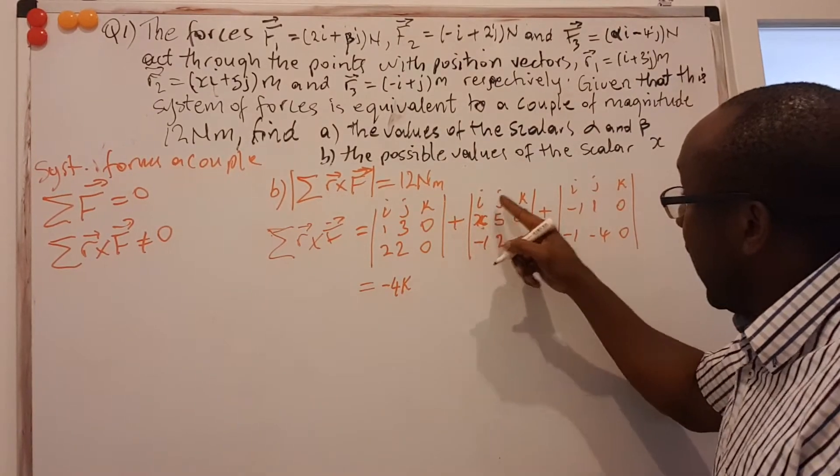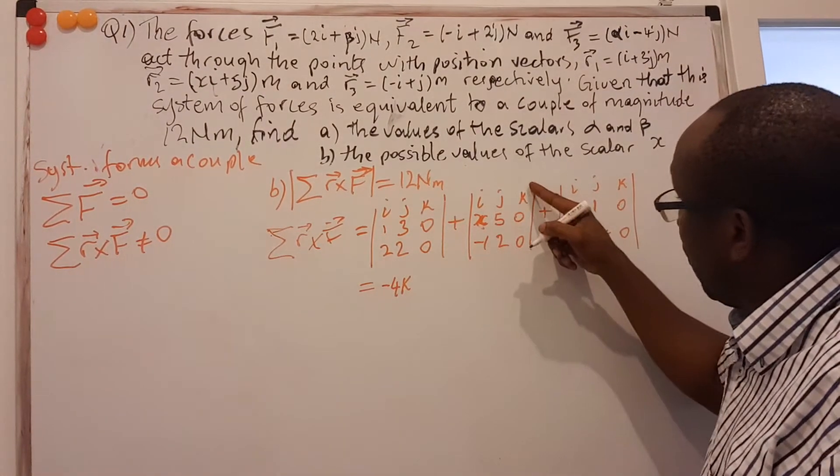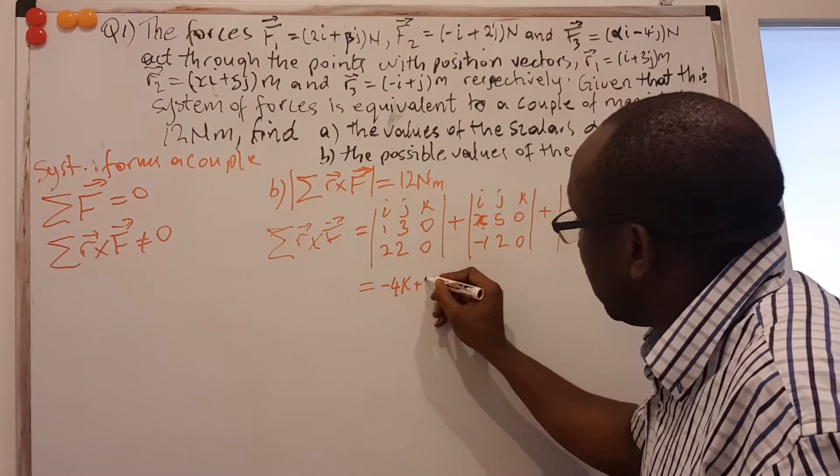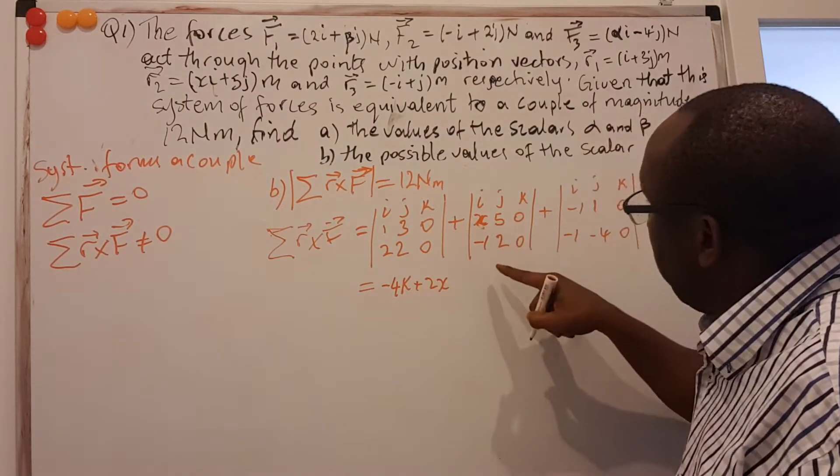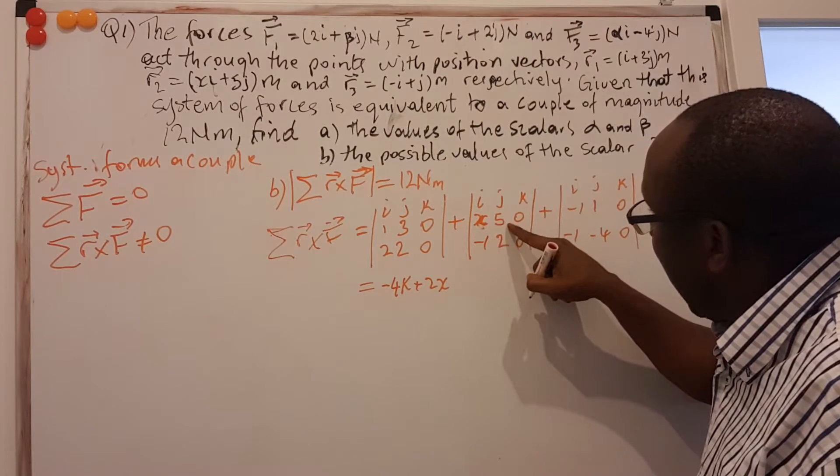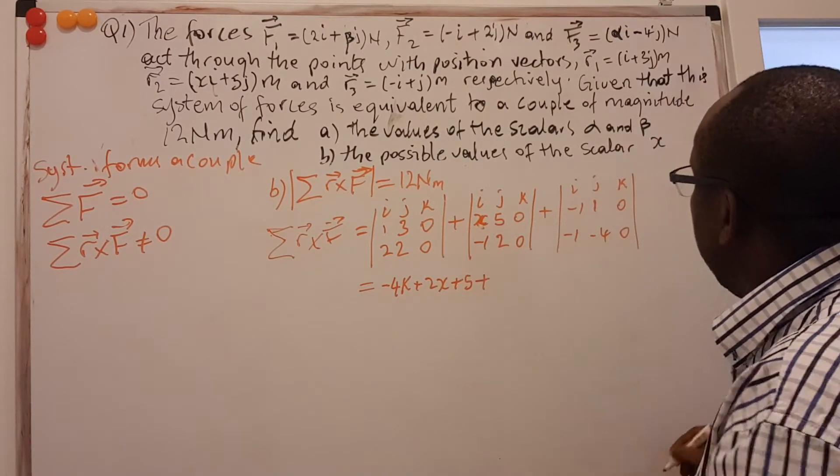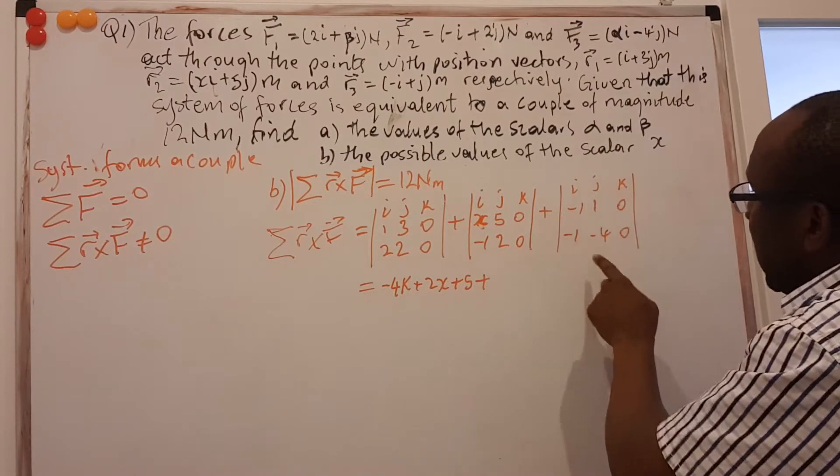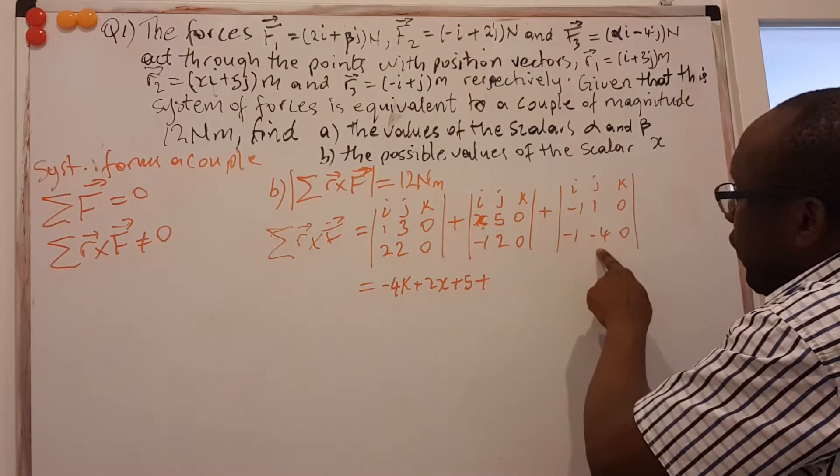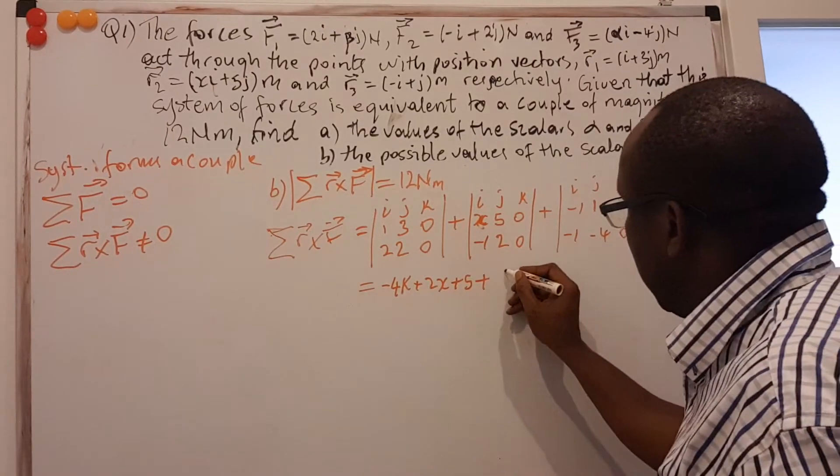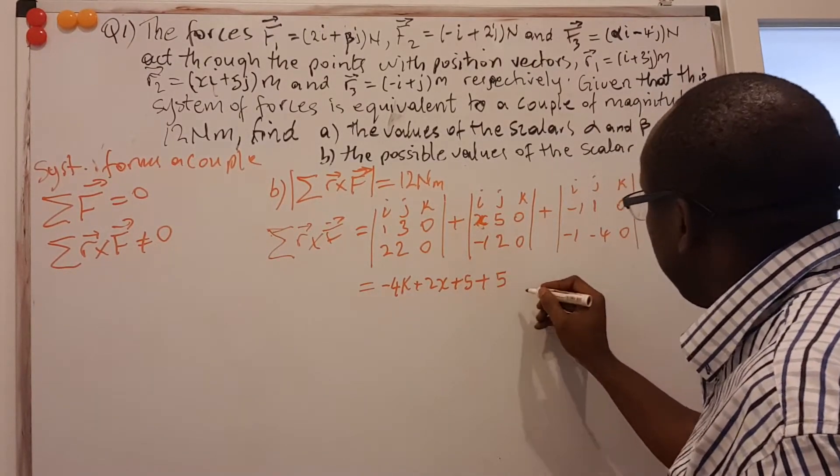We come to this one. I already showed you the problem with i and j since we have two zeros here. So we can just expand on k directly. And this is X times 2. So that is 2X minus -1 times 5. So that's plus 5. Plus. I come here, I do the same. I expand about that. So it is -1 times -4, that's plus 4. Minus -1 times 1, that's plus 1. So that is 5k.